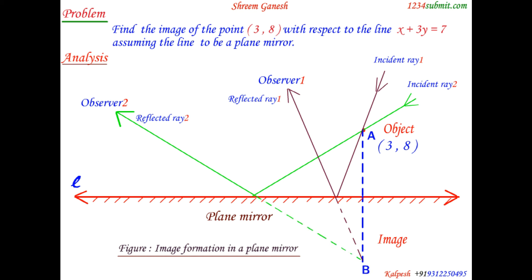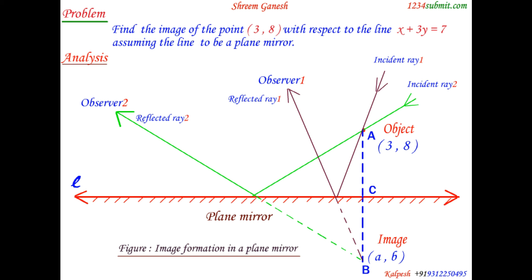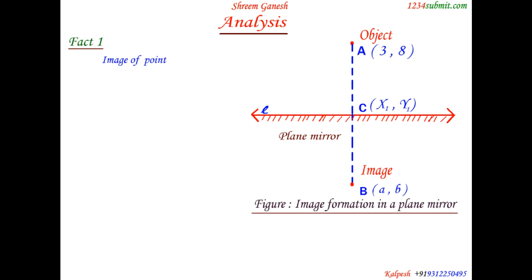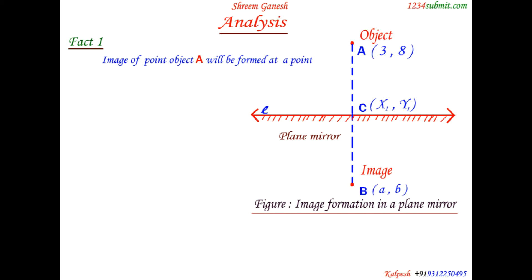Let us consider the image point in this question as point B, and point C is the point of intersection of line segment AB and the mirror line L. Let us assume that the coordinates of image point B are (a, b) and the coordinates of point C are (x1, y1). So we can conclude that the image of point object A will be formed at point B.